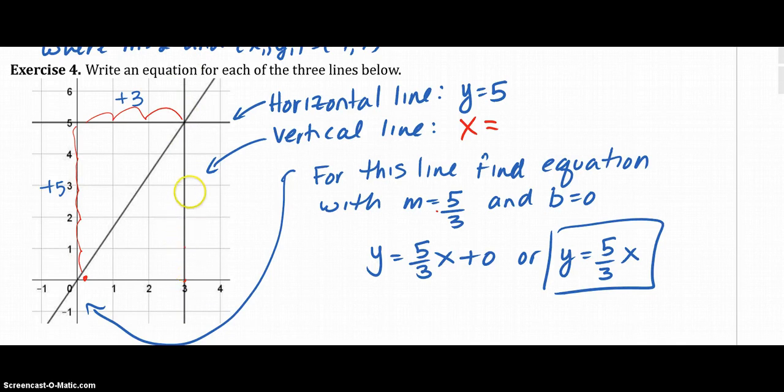For this line, this is where I did this work, the equation has slope of 5 thirds. So I picked 2 points. I picked these 2. And I went up 5 and over 3. And I noticed the b, I didn't have to use that formula we did on the last exercise, because we know what the b is. The b is 0. So it was just y equals 5 thirds x plus 0, or just 5 thirds x.